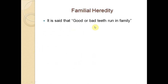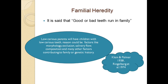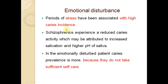It is said that good or bad teeth run in families, suggesting a familial or genetic element in dental caries. However, studies have proven that it is not genetics per se, but the same pattern of teeth — morphology, occlusion, salivary flow, and other factors — which influences the caries pattern in families. Emotional disturbance and stress are always associated with high caries incidence because stressed people do not take sufficient self-care. In contrast, schizophrenic patients show reduced caries due to increased salivation and high pH of saliva.